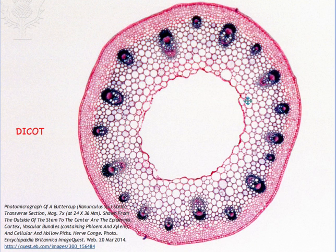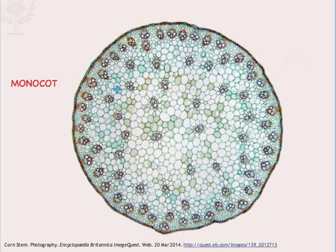In dicots, these vascular bundles are arranged in a definite pattern along the periphery of the stem, whereas in monocots, the vascular bundles are scattered throughout the stem.